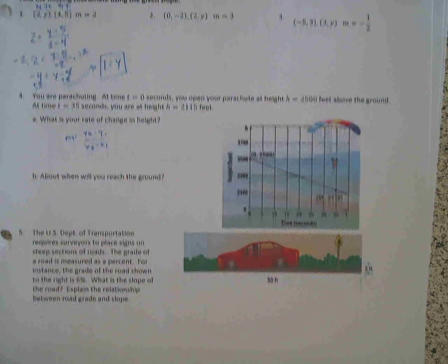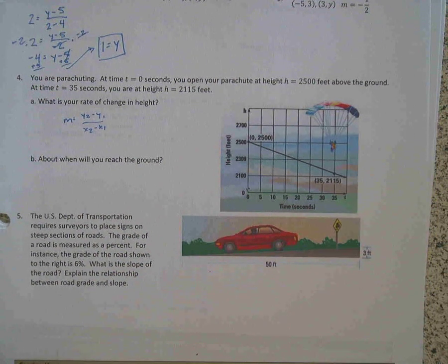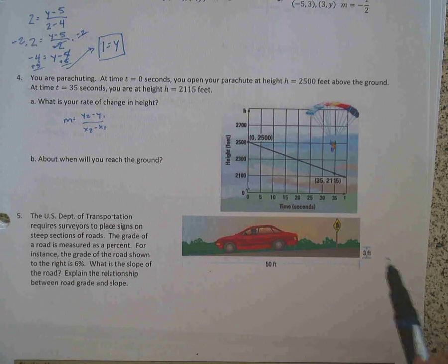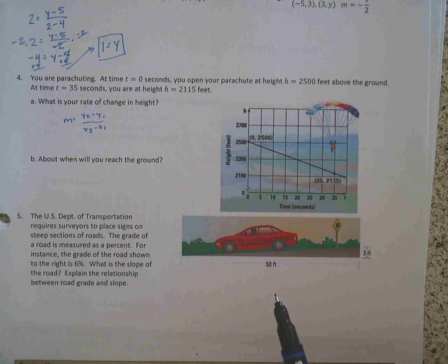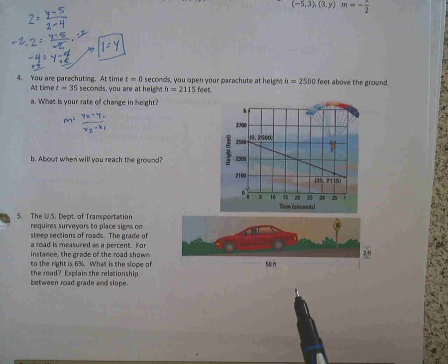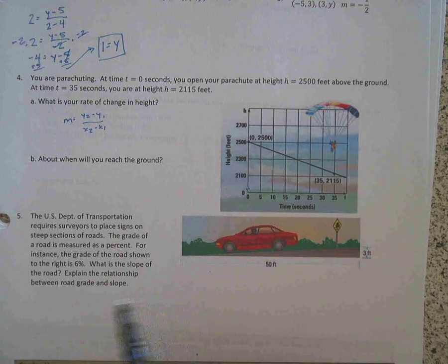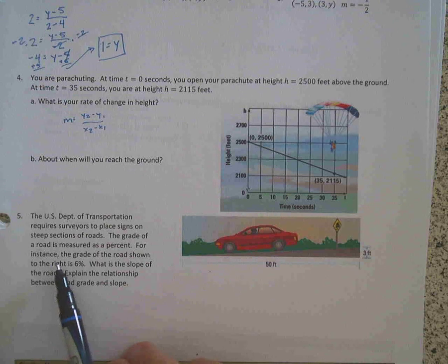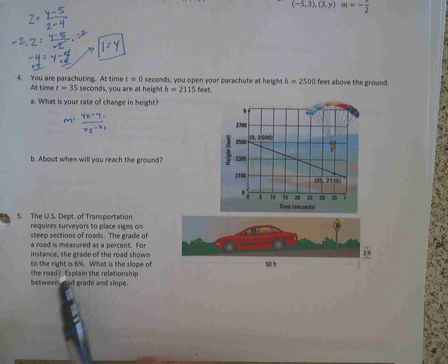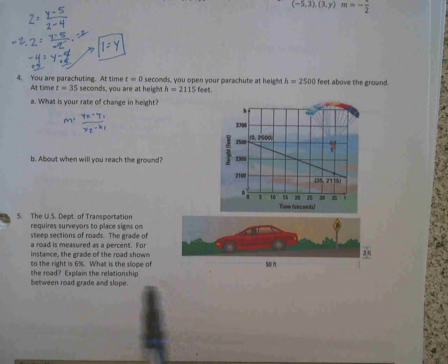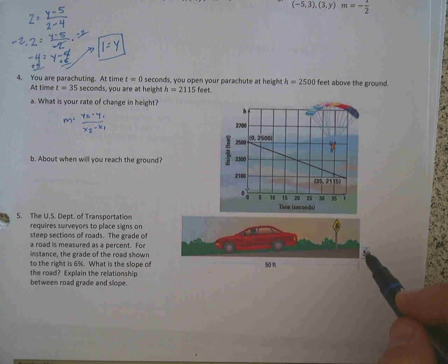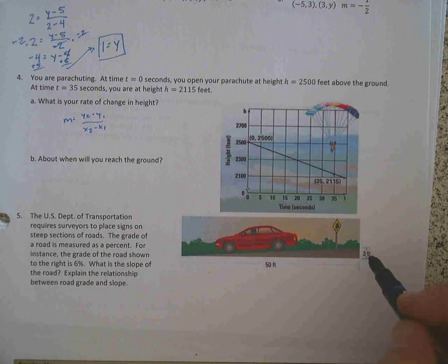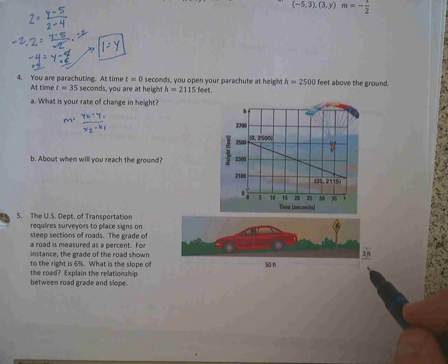Let's go ahead and look at the last one here. So it says the U.S. Department of Transportation requires surveyors to place signs on steep sections of roads. The grade of a road is measured as a percent. And so what that means is, for instance, the grade of the road shown at the right over here is 6%. And that means that in 50 feet, it goes down 3 feet.